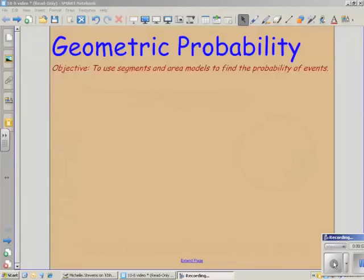Geometric probability: to use segments and area models to find the probability of events.